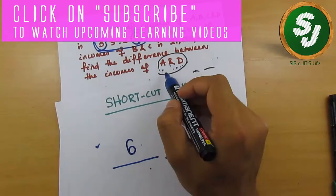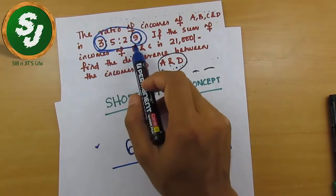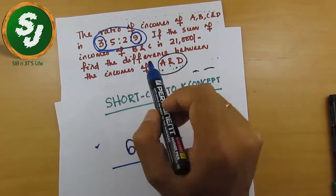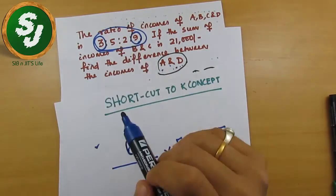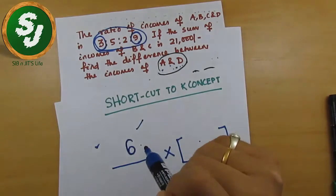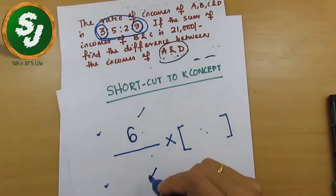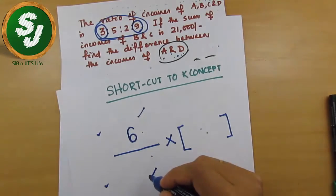Whatever is asked in the question, you write the ratio part of that in the numerator. It was asking to find the difference between A and D, so I went to the ratio part and wrote the difference between A and D — that is the ratio part of the question. Now, what should be written in the denominator part?